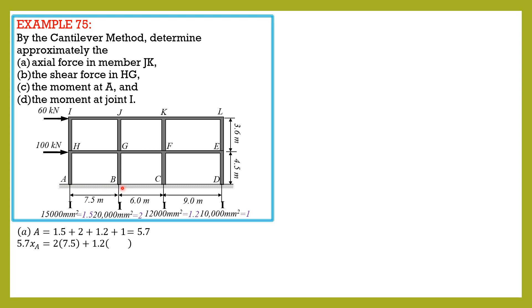Area 1.5 times 0 is not shown. So 2 times 7.5 plus 1.2 times 13.5, where 13.5 is 7.5 plus 6, then plus 1 times 22.5, where 22.5 is 7.5 plus 6 plus 9. Area of this column times 22.5. So xa is equal to 9.421 meters.